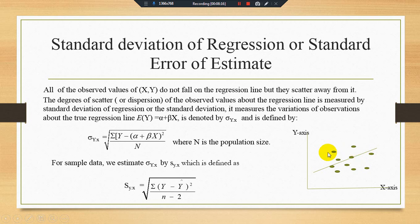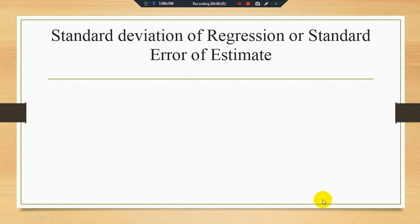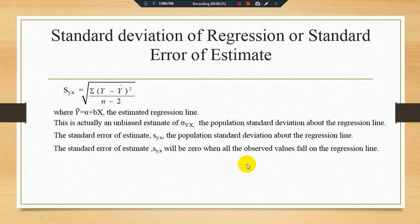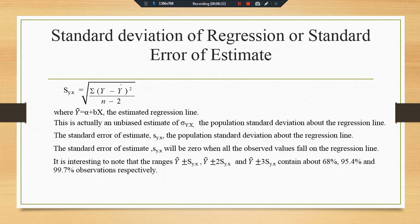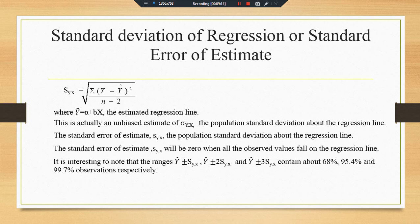If all points fall on the estimated regression line, the standard error equals zero, though this is a very rare case in actual data. An interesting rule: using one standard deviation of the regression line, the estimated regression line covers 68% of the data. Using two standard deviations covers 95.4% of the data, and using three standard deviations covers 99.7% of the data. These are very important ranges for estimated Ŷ and the standard error of the regression line.